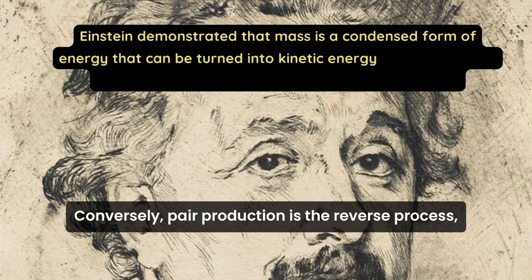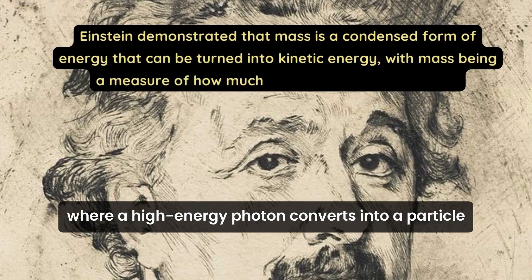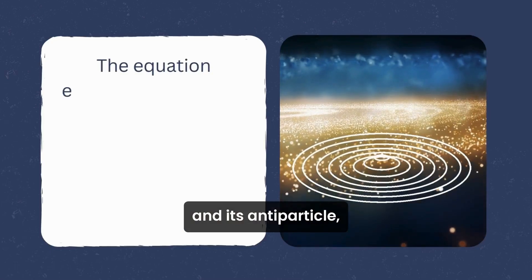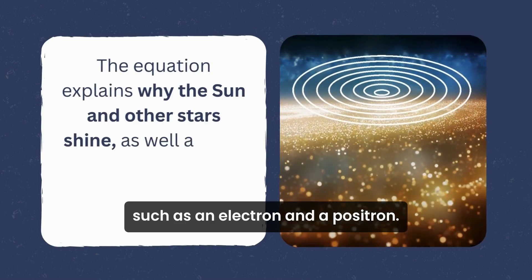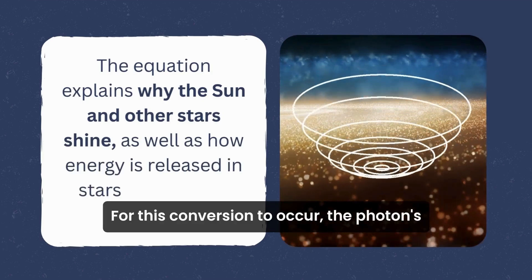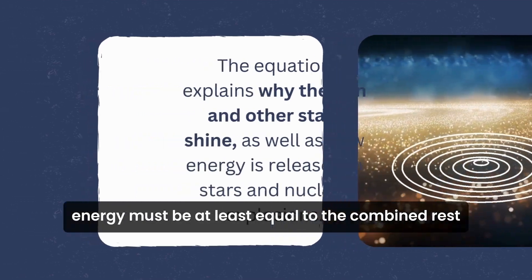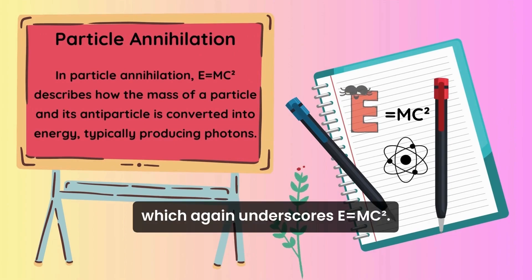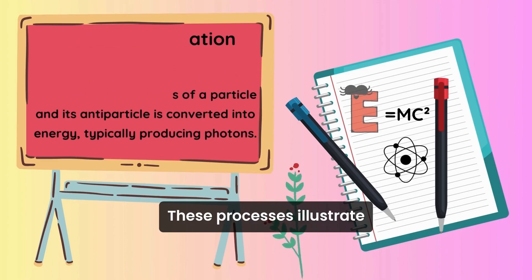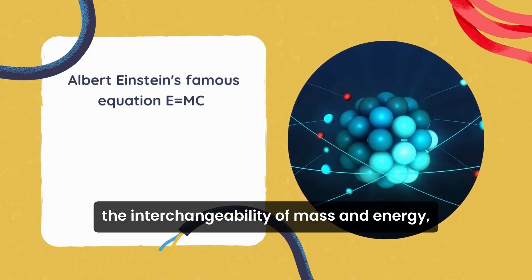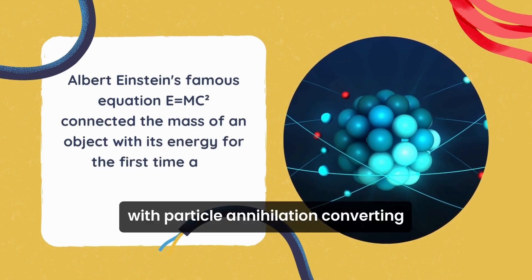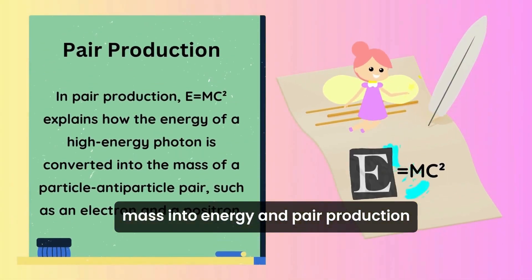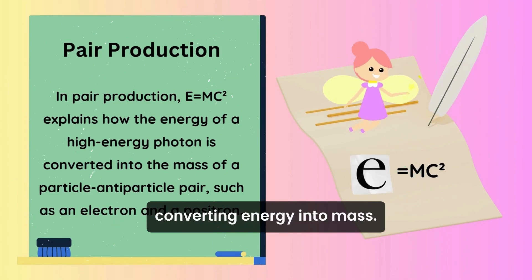Conversely, pair production is the reverse process, where a high-energy photon converts into a particle and its antiparticle, such as an electron and a positron. For this conversion to occur, the photon's energy must be at least equal to the combined rest-mass energy of the electron and positron, which again underscores E equals mc². These processes illustrate the interchangeability of mass and energy, with particle annihilation converting mass into energy and pair production converting energy into mass.